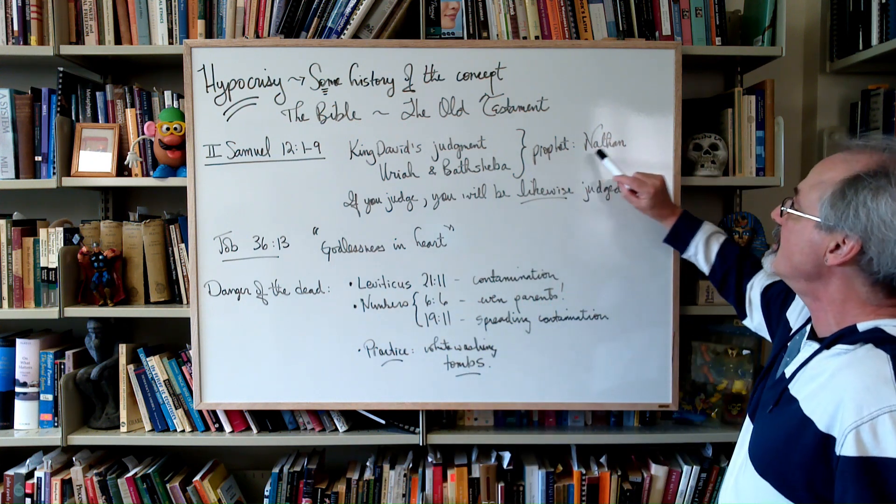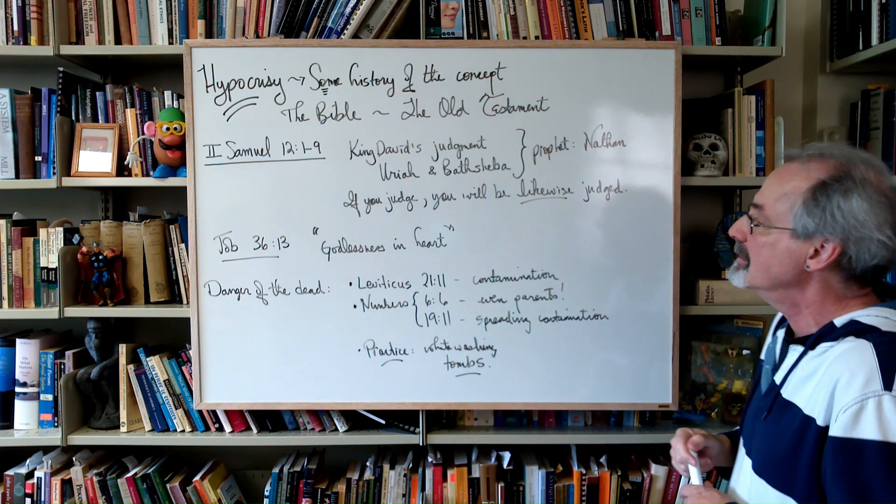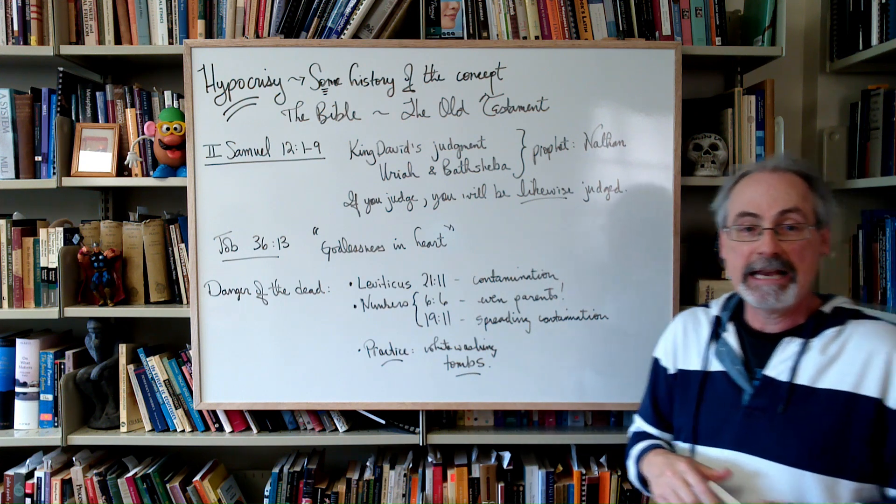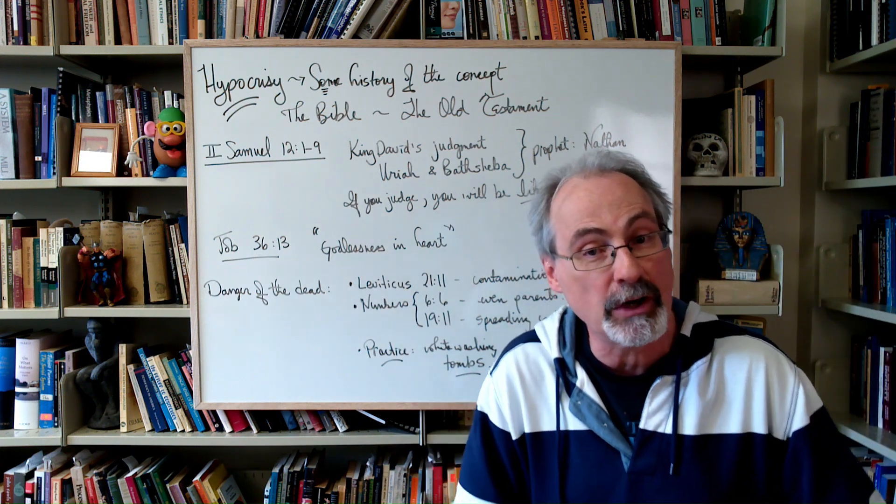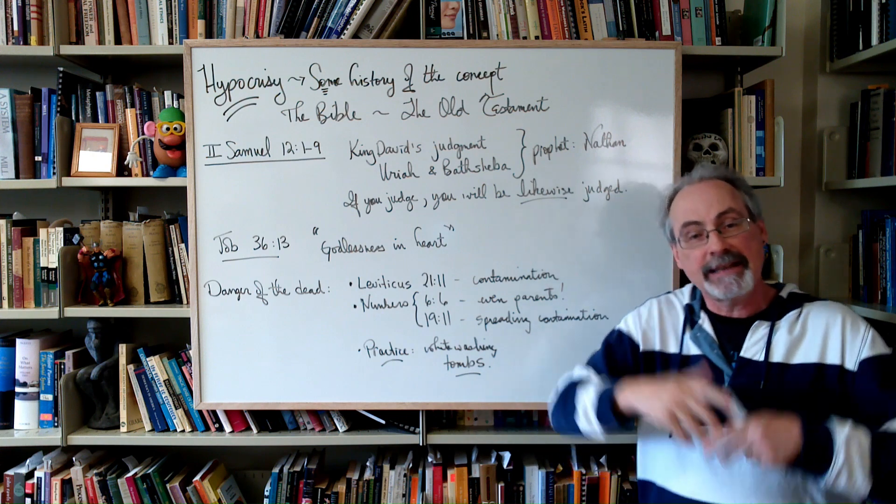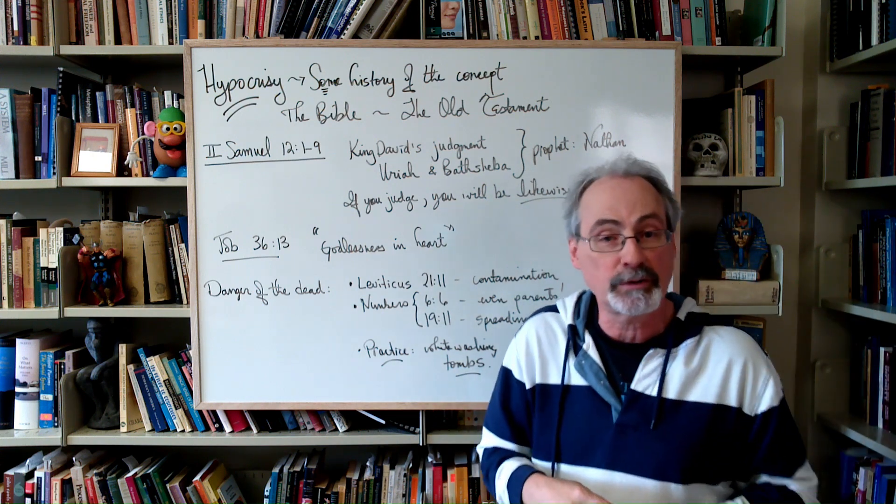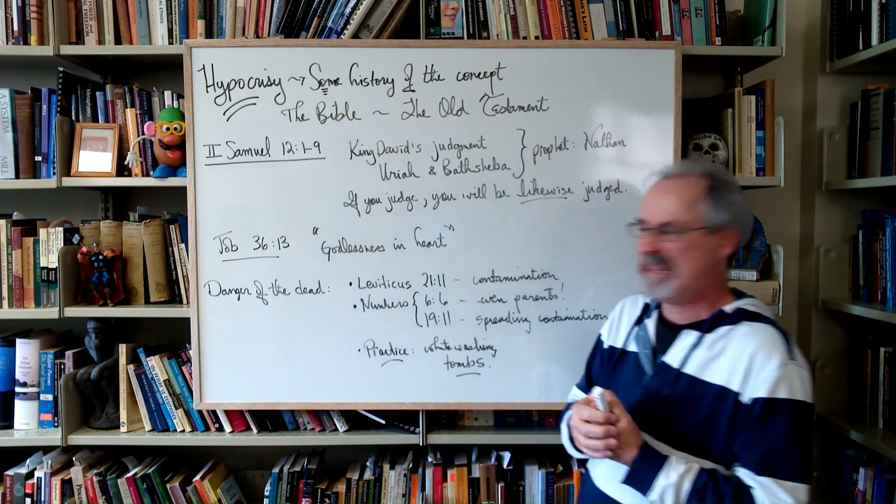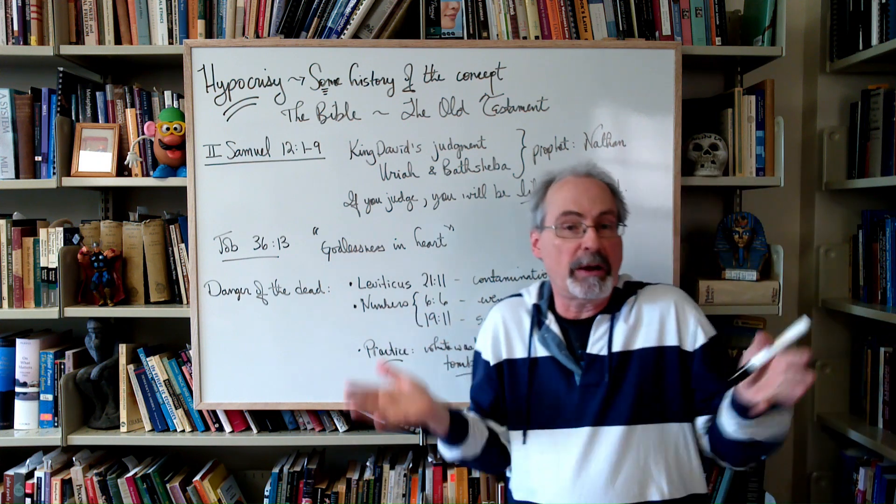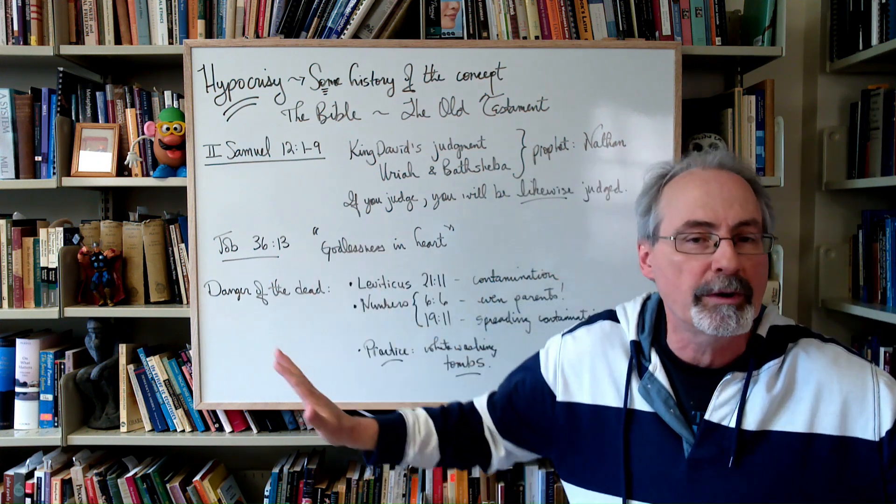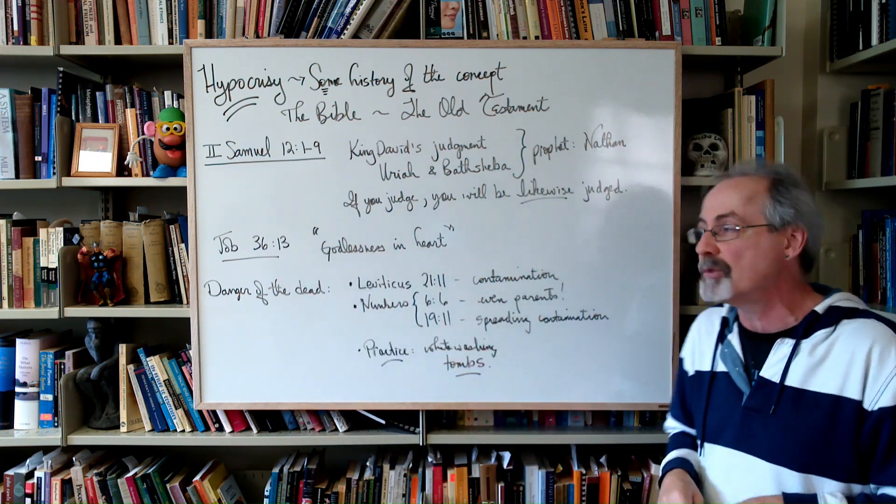So what God does is he sends in a prophet, a guy named Nathan. So Nathan comes in, and he's going to teach King David a little lesson, and he tells King David a little story, a parable. I think the whole thing is kind of a parable, but there's a parable within a parable. Definitely Nathan tells this little story.